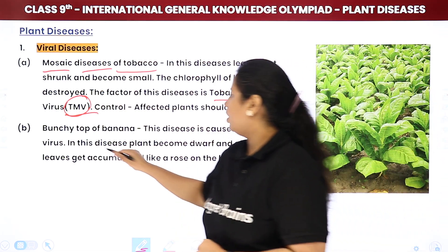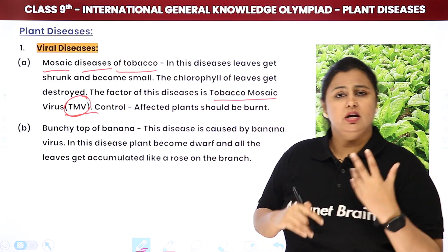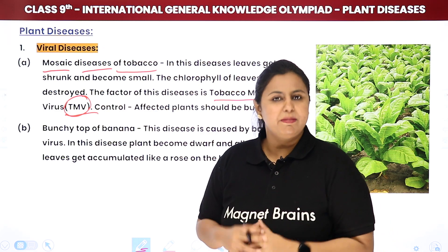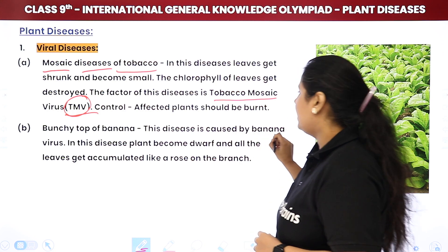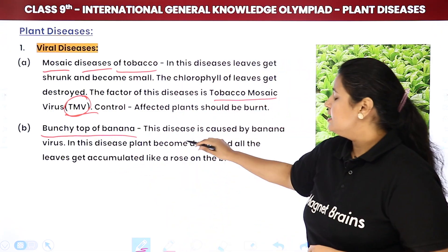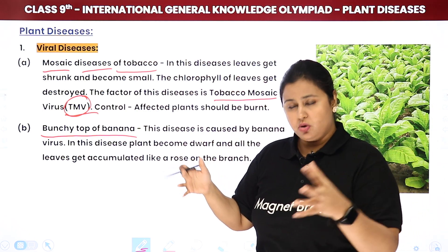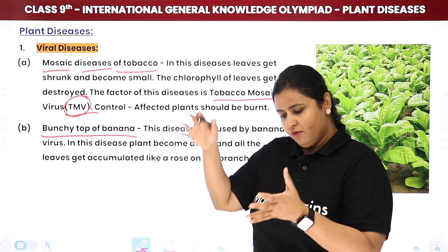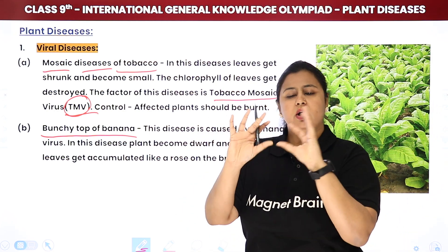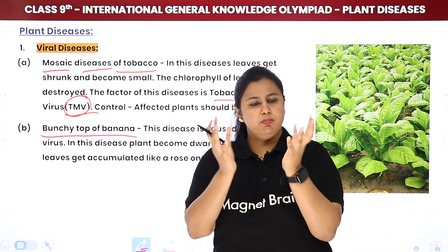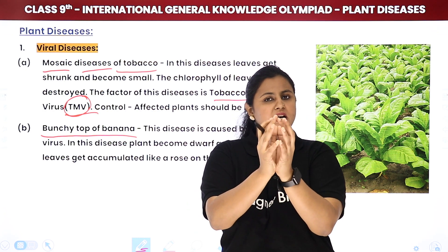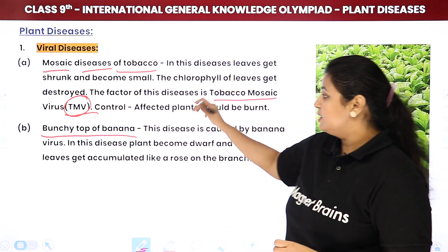Now let's talk about Bunchy Top of Banana. It's a viral disease caused by banana virus. The plant becomes dwarf — it shrinks in size. All the leaves are accumulated at the top like a rose shape, closed together like petals in a bud. That is what this particular virus does.